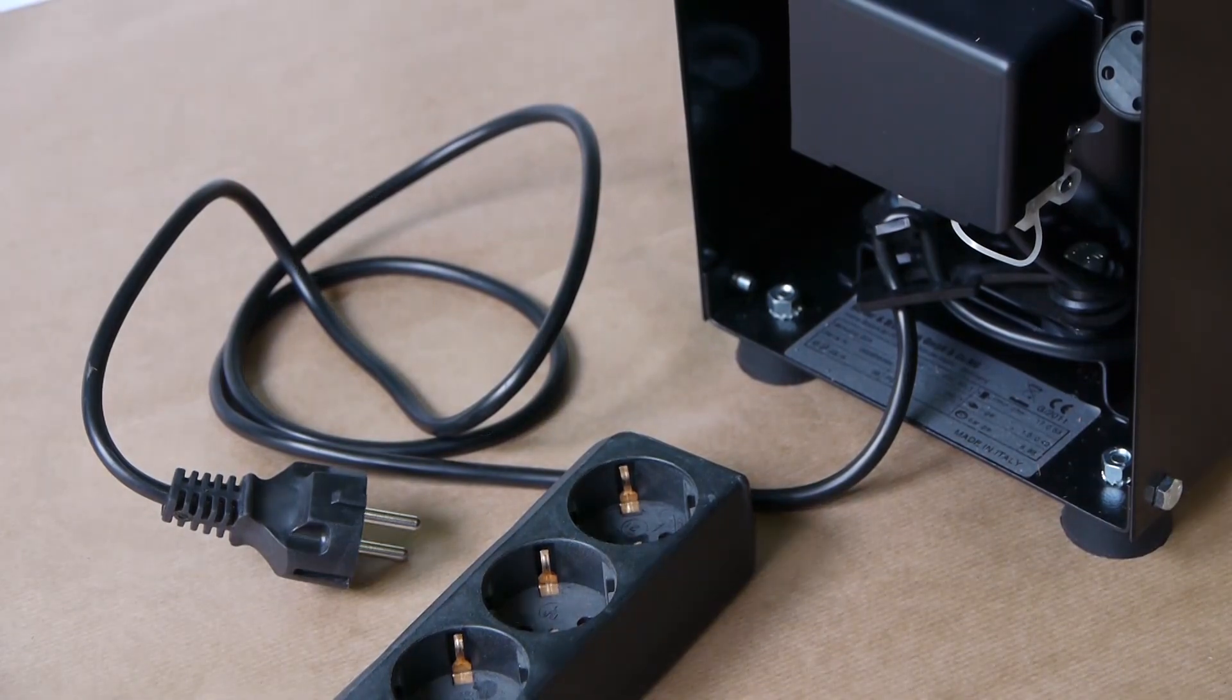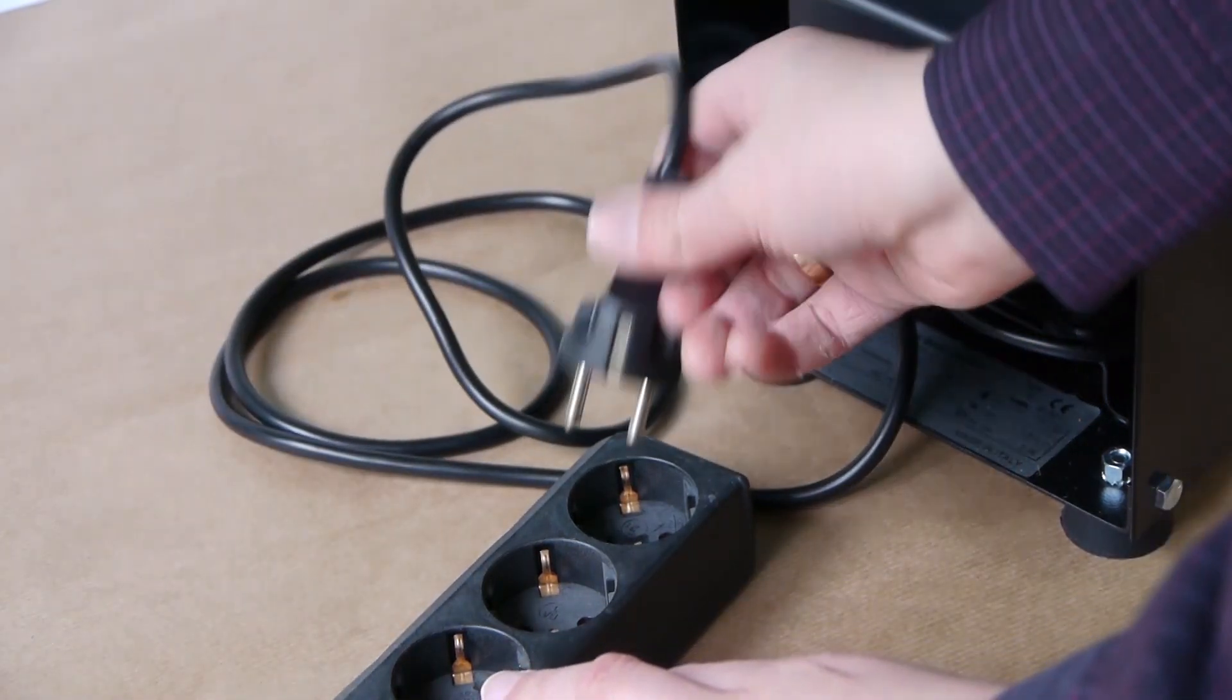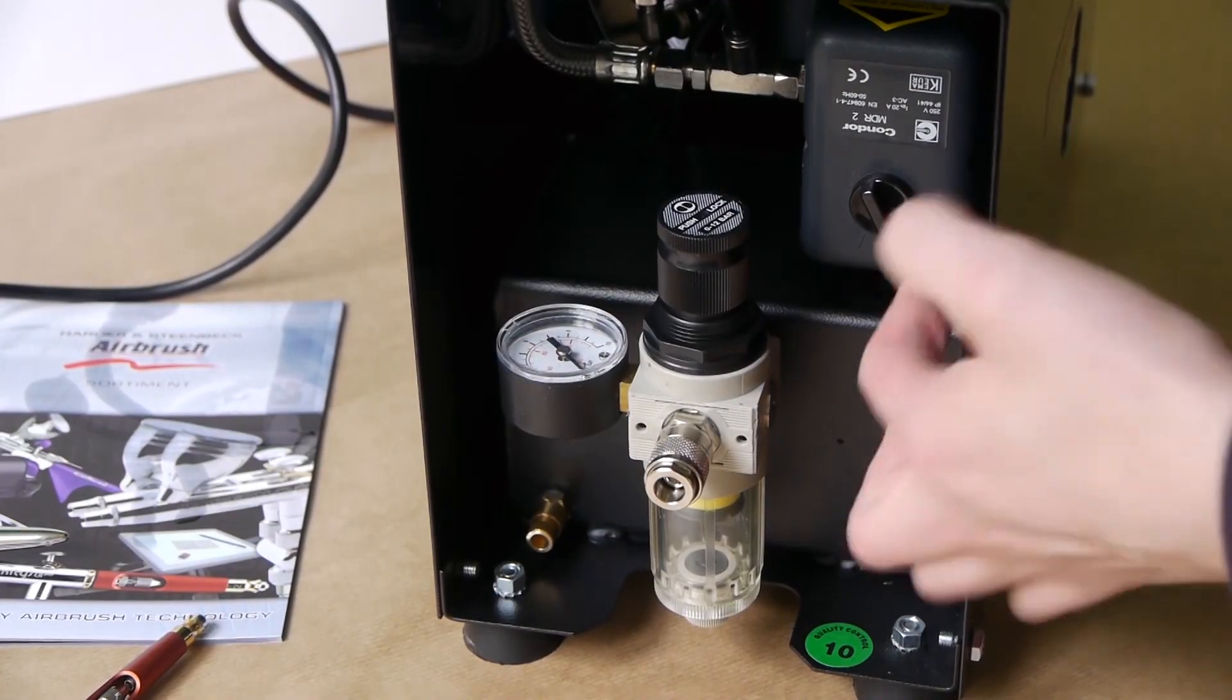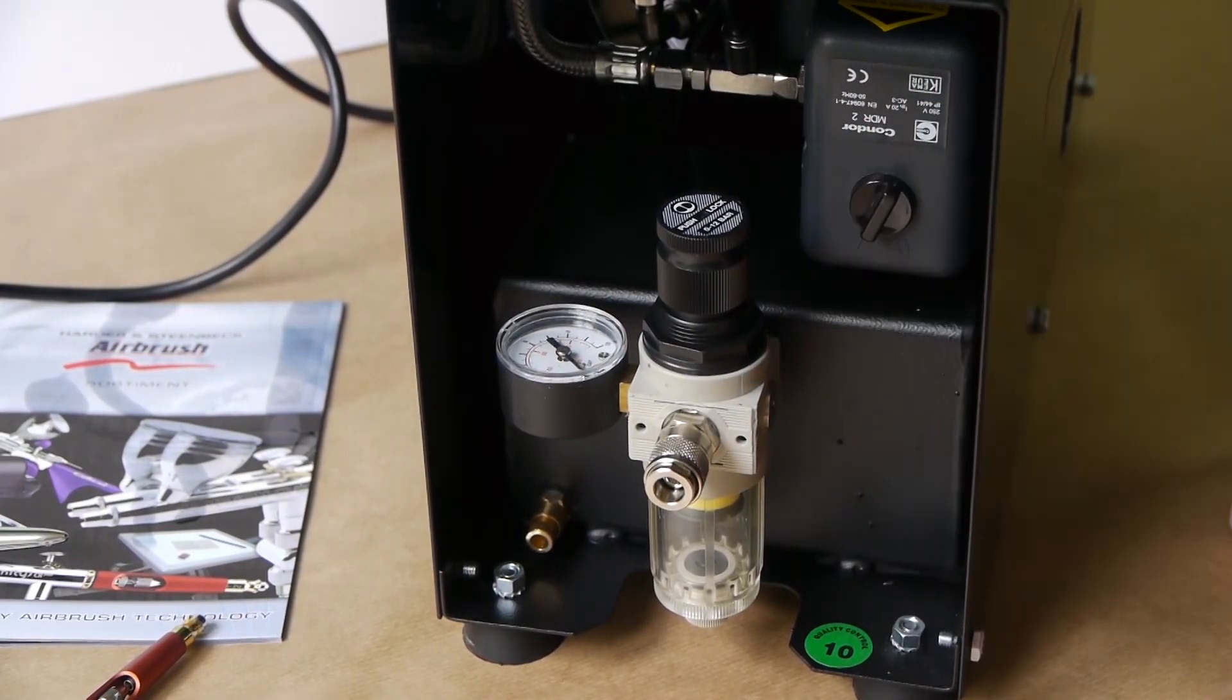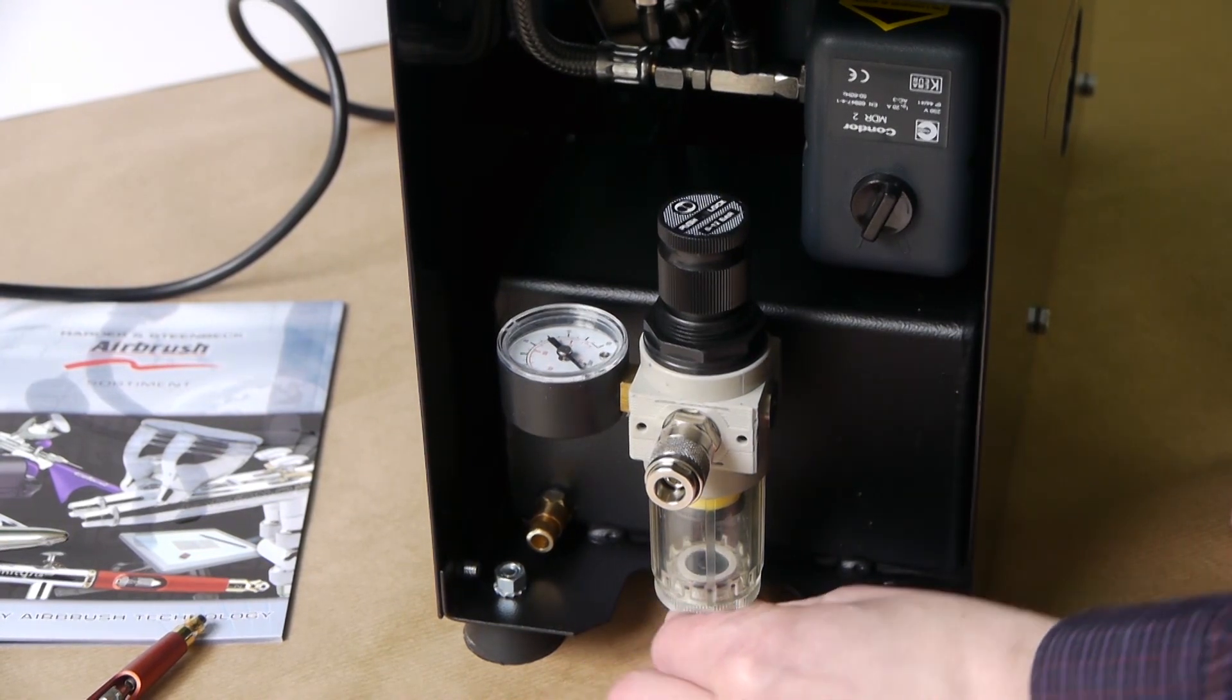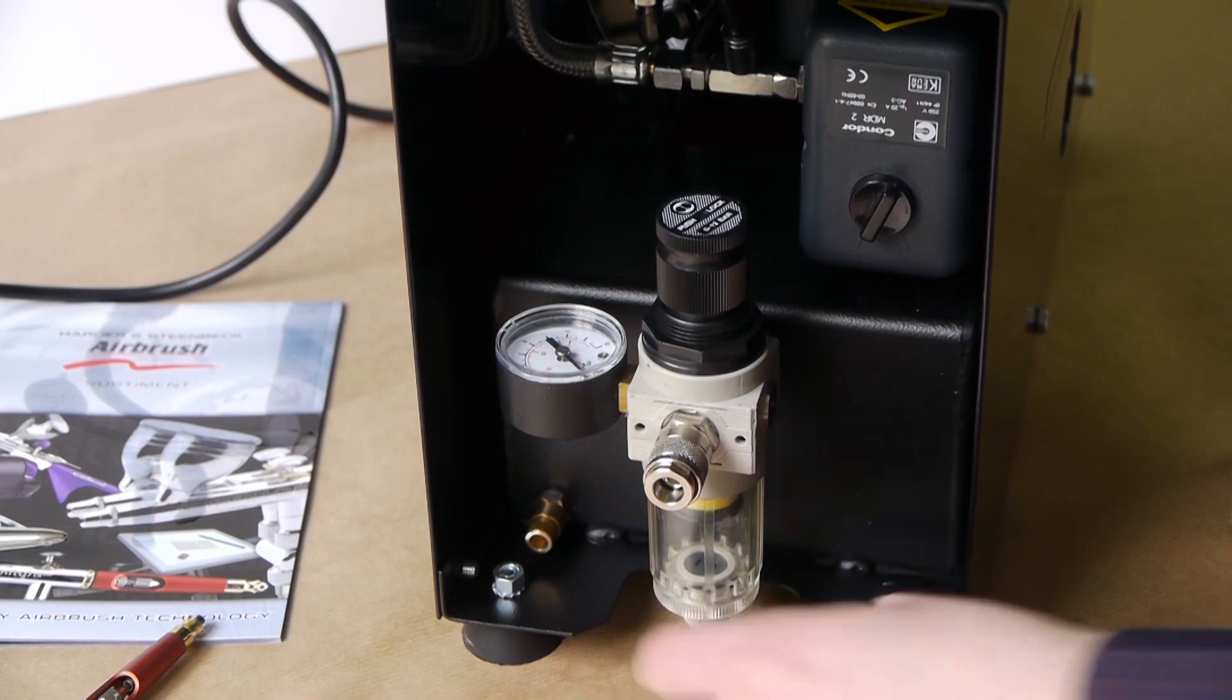Now connect the device with a suitable power source. Turn the on-off switch to position 1 in order to put the device into operation. Check whether the locking screw of the water separator is closed.